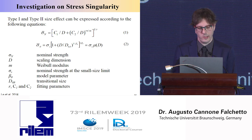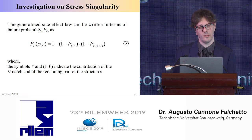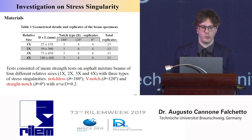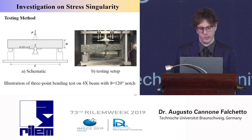You get that in terms of failure probability, there is a contribution of failure probability associated with the part of the beam affected by the notch — the V-notch — and the part of the beam unaffected by the notch. I prepared specimens for this, working with a V-notch of 130 degrees and a depth of 20% of the specimen size.